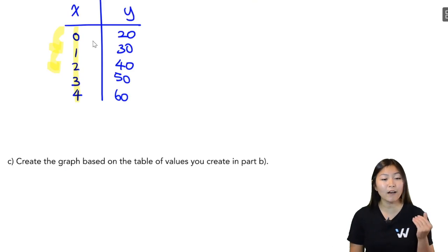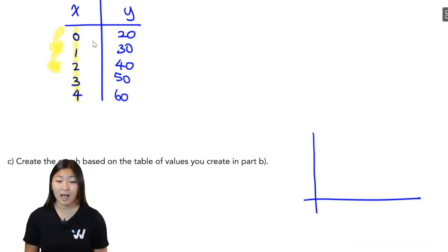In part C, we want to create a graph based on this table of values that we created. When it comes to a graph, I need my axes. I have my horizontal axis, which is my independent variable, X. Remember, this is the number of hours that this person worked. And then I have my vertical axis for my dependent variable, Y, which is the amount that we get paid in dollars.